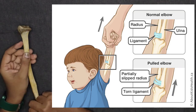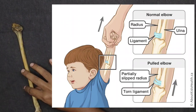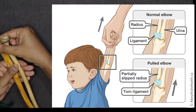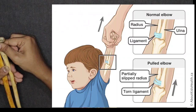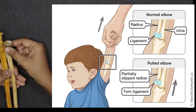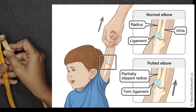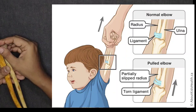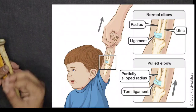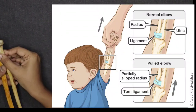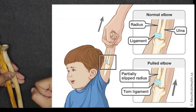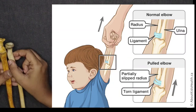The third clinical point is Pulled Elbow. The neck of the radius is held by the annular ligament. If a child's hand is pulled suddenly, the head of the radius can slip through the annular ligament. This is called subluxation — a partial dislocation. Because the head slips when the elbow is pulled, this condition is called Pulled Elbow.